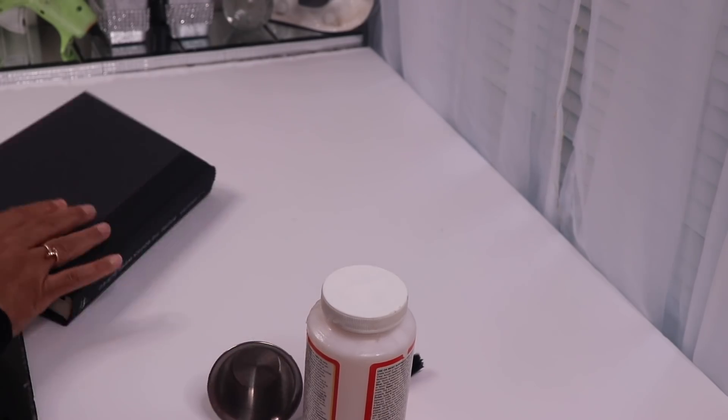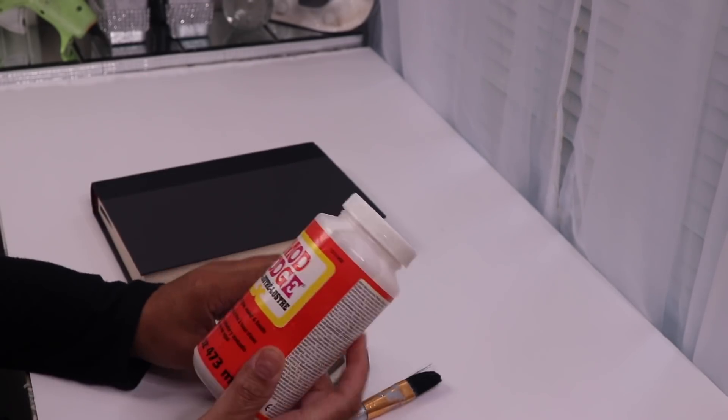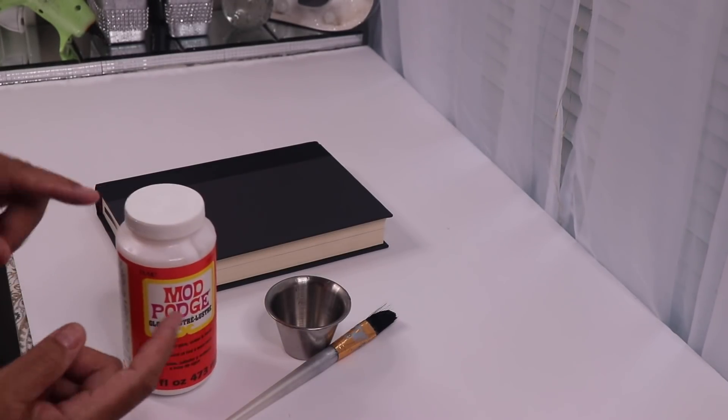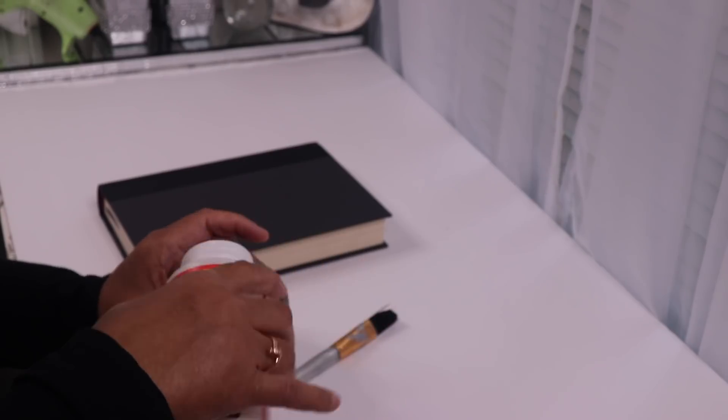All right, the first thing I did was remove the cover and then use Mod Podge to glue the first few pages together. Now I'm using Mod Podge from this large container, but you can find small containers of Mod Podge at Dollar Tree.